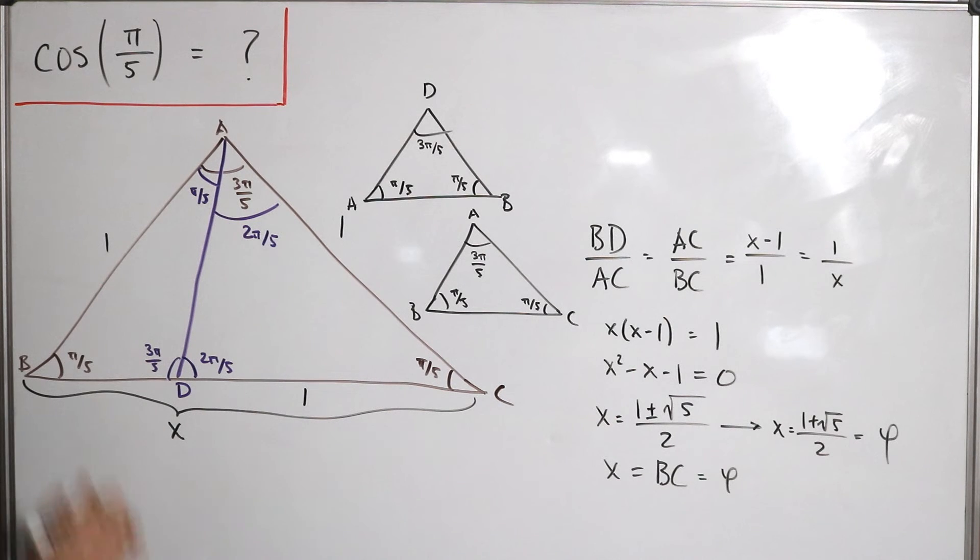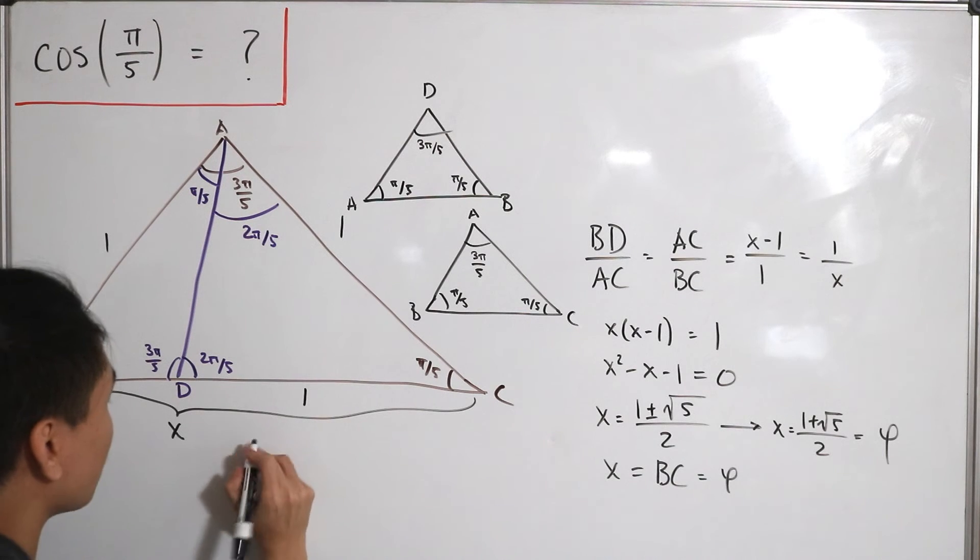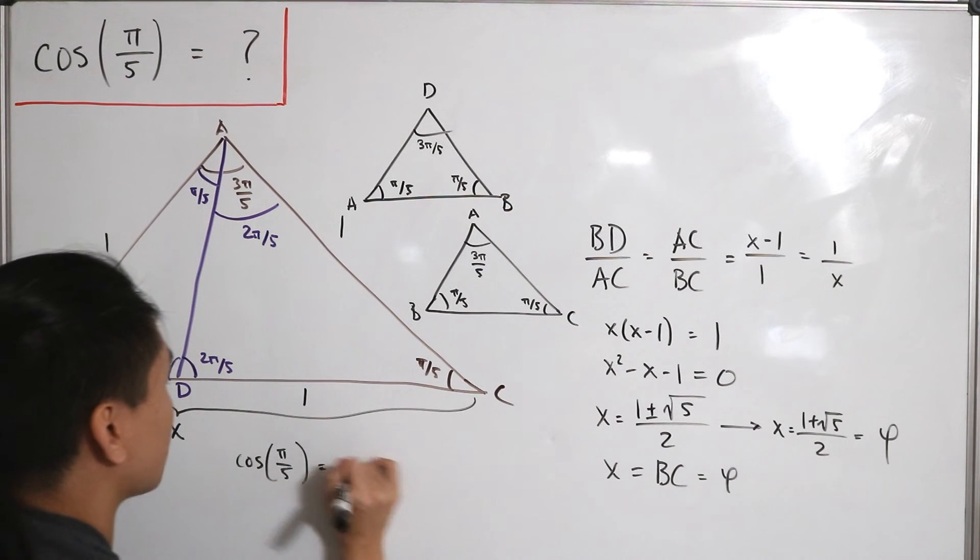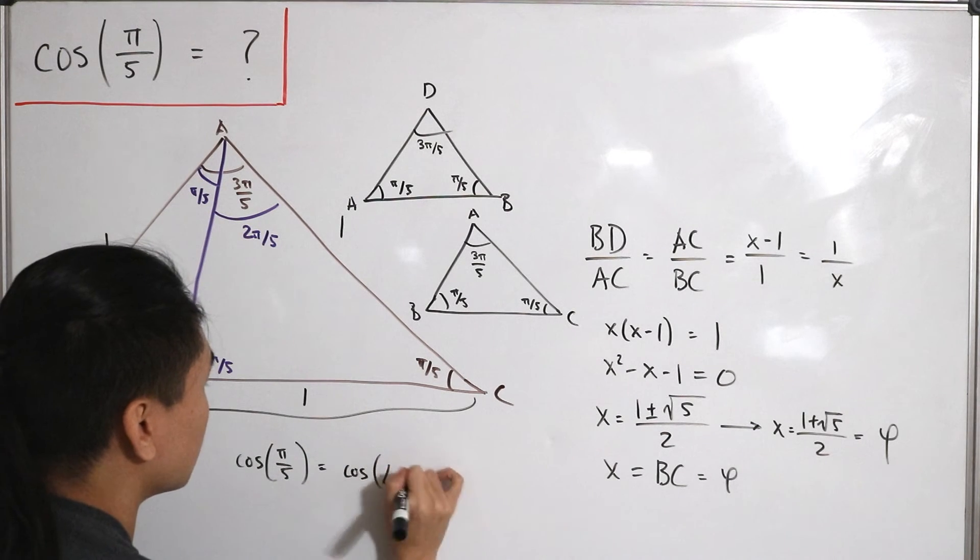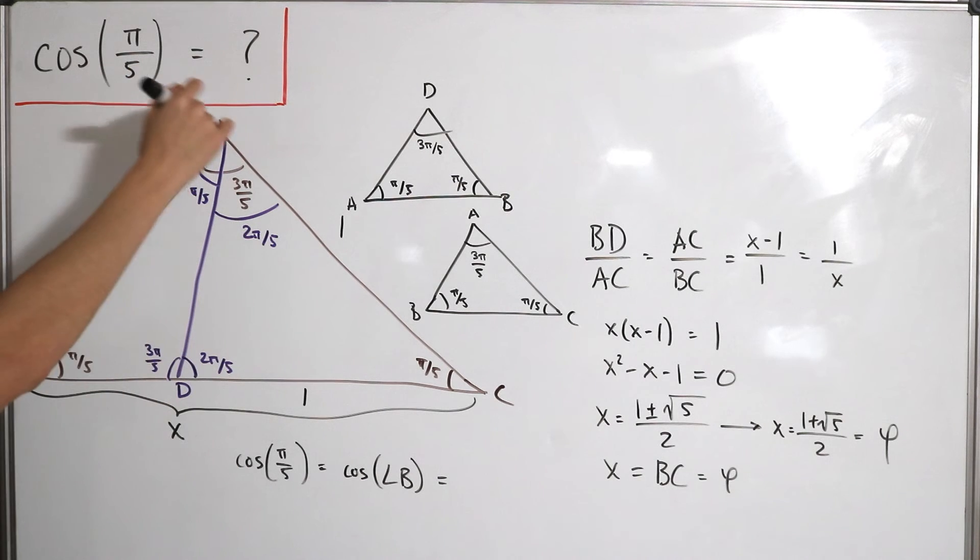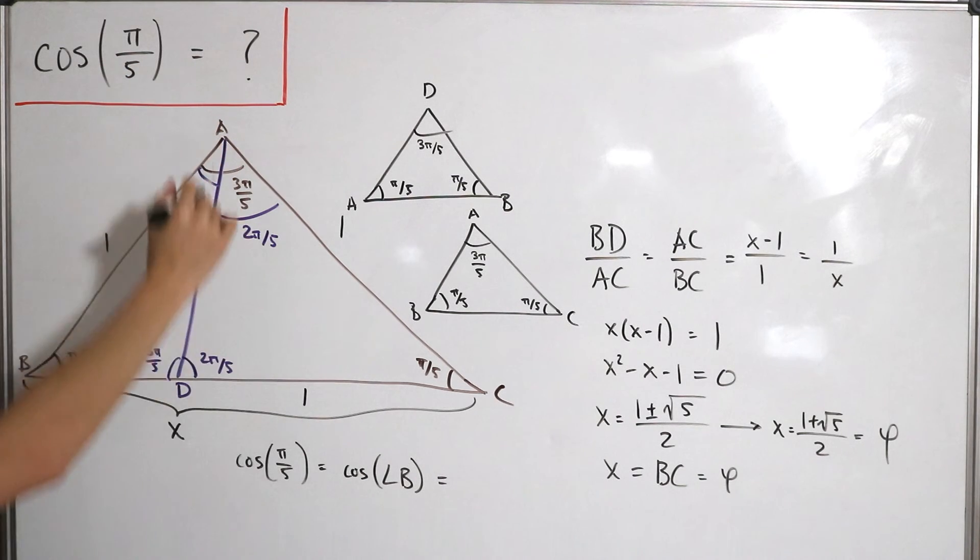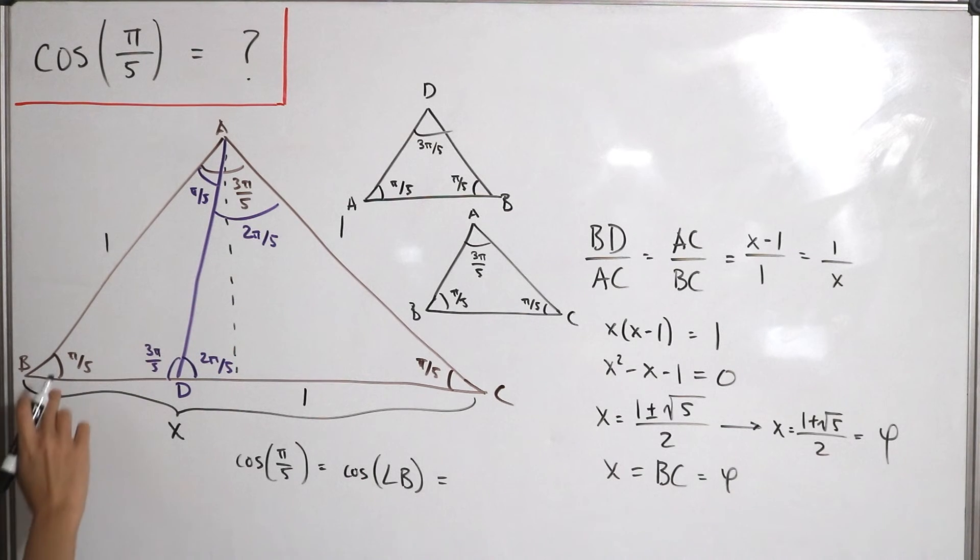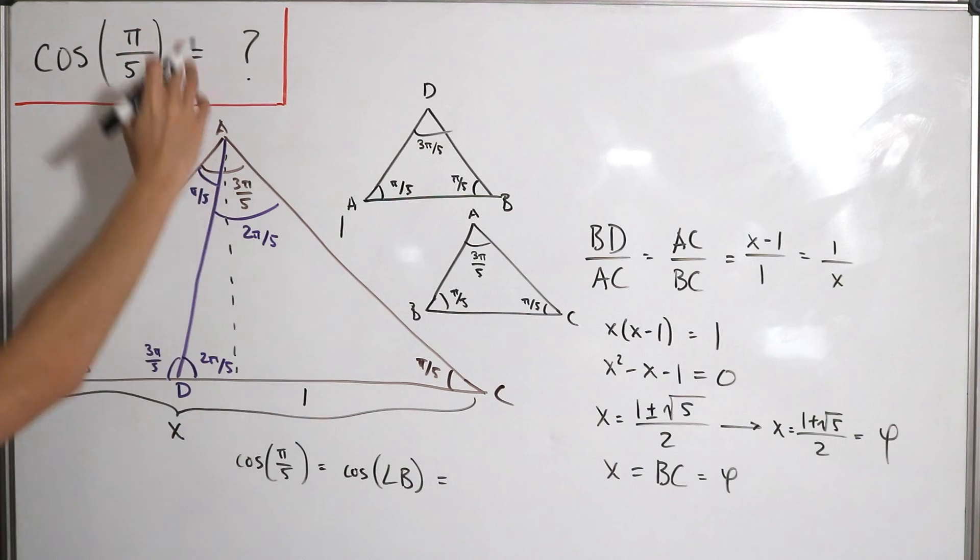However, we are not done because we actually want to find what cosine of π/5 is equal to. Well, this last step is simple from here. Cosine of π/5, looking at over here, this is cosine of angle B. That means we can draw a line straight down so that it's perpendicular to BC. Let me just put this back like that—we don't need to label the vertices, that's okay. We can apply the Pythagorean theorem. So this means I have the adjacent over the hypotenuse.